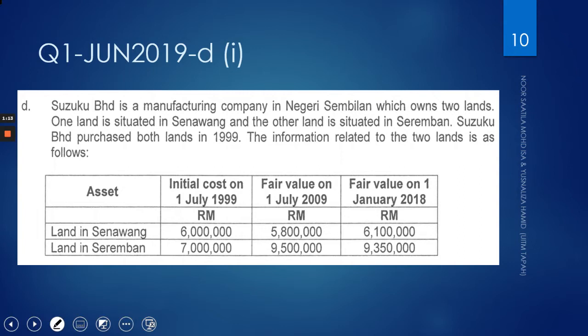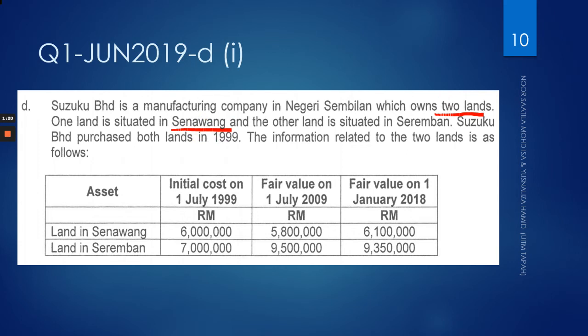Suzuku Manufacturing Company is a manufacturing company in Negeri Sembilan and they own two lands. One land is in Senawang and the other land is in Seremban.